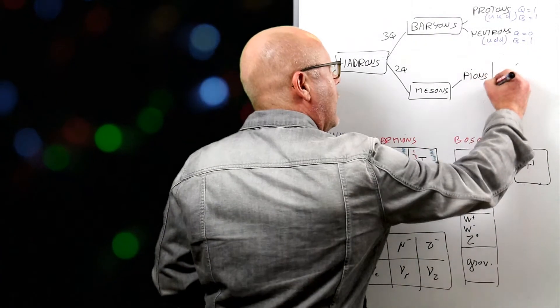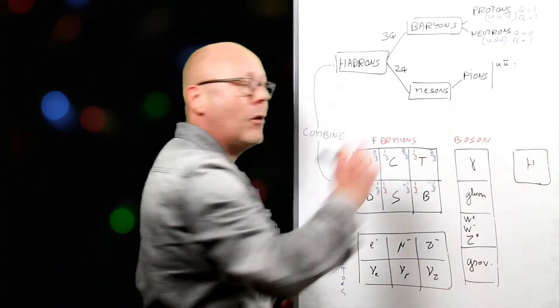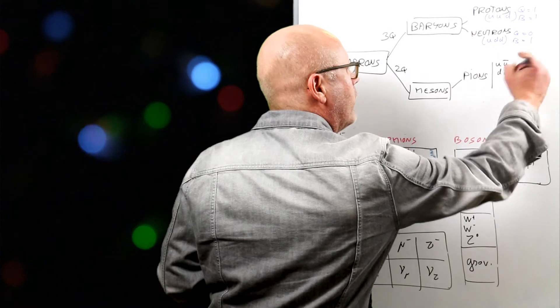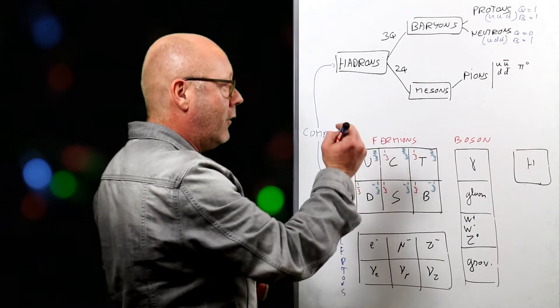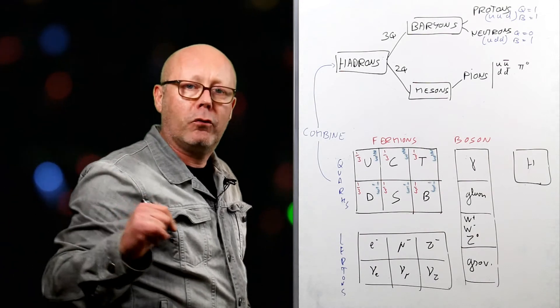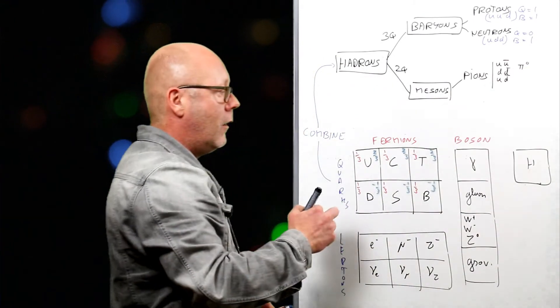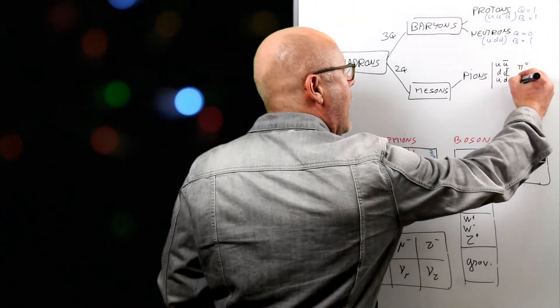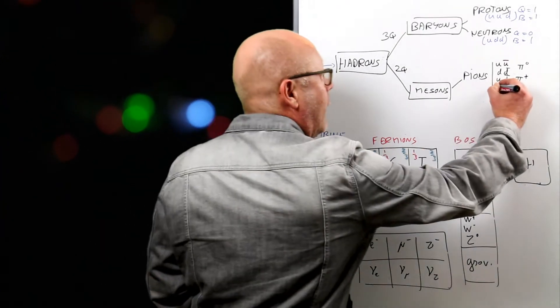So for instance, if I use up and anti-up, I get a pion. If I use down and anti-down, I also get a pion. These are pi zeroes, they don't have any charge. You see, two thirds minus two thirds is zero. But you can also have charged pions. If for instance I put an up and an anti-down, there'll be two thirds and minus minus one third, so one. So here I will have a positive pion with one charge.